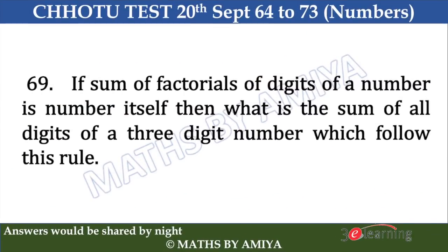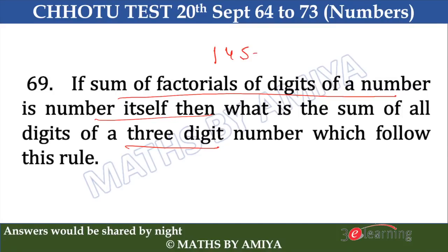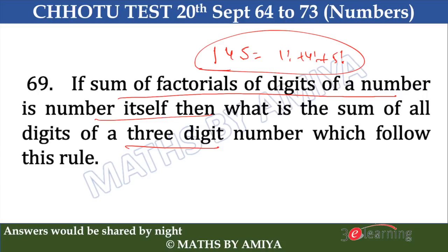Question 69: the sum of factorials of digits of a number equals the number itself. You must know that 145 equals 1! + 4! + 5!. Either you know this or you need to work it out by hit and trial. We need to find the sum of digits, which is nothing but 1 + 4 + 5 = 10. The answer is 10.